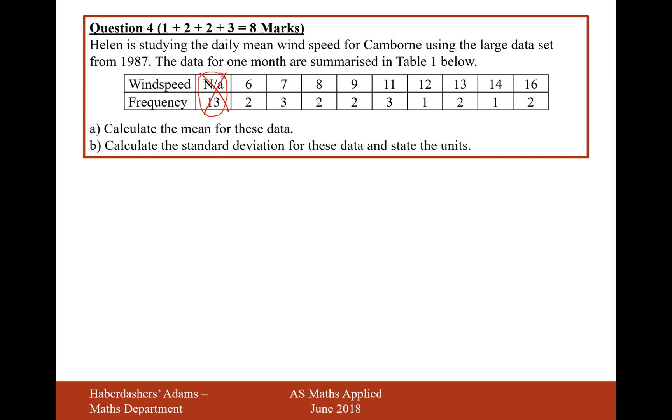So what we'll do then is we'll add up all our data values together and divide by the amount of days that we've added together. So 6 plus 6 add 7 plus 7 plus 7, add 8 plus 8, add 9 plus 9, add 11 plus 11 plus 11, add 12, plus 13 plus 13, plus 14, plus 16, plus 16.